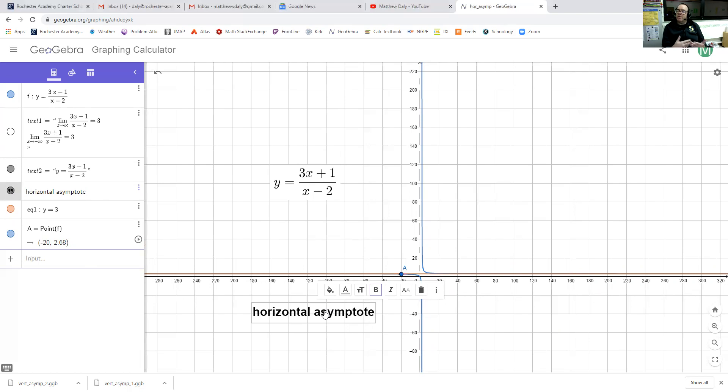So think for a moment about how our limit notation is going to be different than it was when we were dealing with vertical asymptotes. So for vertical asymptotes, I might have said that the limit as x approaches 2 from the right-hand side of this function is equal to positive infinity,